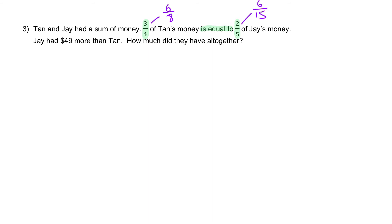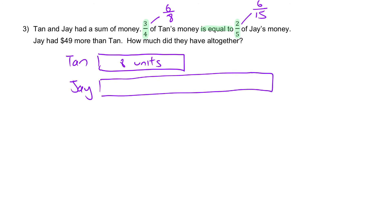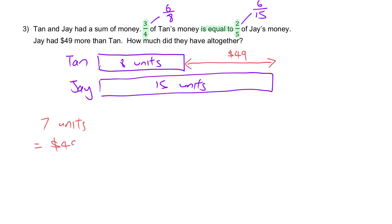This trick applies to all questions regardless of whether it's money, mass, or any other quantity — as long as the question states a fraction is equal to another fraction. Make the numerators the same, and the denominators represent their own totals. So Ton has 8 units and Jay has 15 units. The difference is 15 minus 8 equals 7 units, and 7 units equals $49.